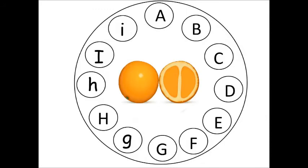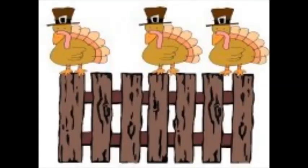A fine motor letter activity during fruit and vegetable week is for the children to match up the letters to the letters that are around the orange. The children can use clothespins and clip the clothespins to the letters. We also have a math activity where the children will shake a cube die to see how many turkeys are sitting on the fence, and then they will put that many turkeys on the fence.